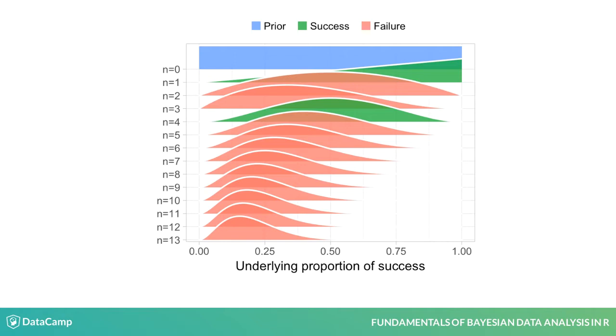In Bayesian jargon you took a prior probability distribution, updated it with data and the result was a posterior probability distribution. These two words, prior and posterior, are used so much in Bayesian data analysis that they are worth pointing out.